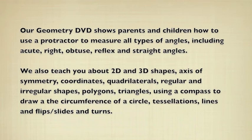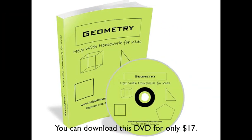Our geometry DVD shows you how to use a protractor to measure all types of angles including acute, right, obtuse, reflex and straight angles. We also teach about 2D and 3D shapes, axis of symmetry, coordinates, quadrilaterals, regular and irregular shapes, polygons, triangles, how to use a compass to draw the circumference of a circle, tessellations, different types of lines, and we also tell you what a flip, slide and turn is.